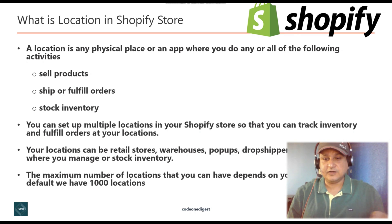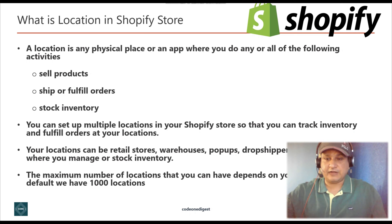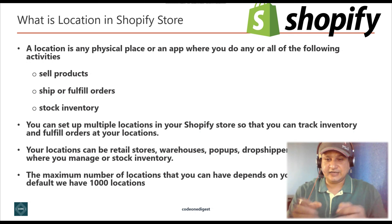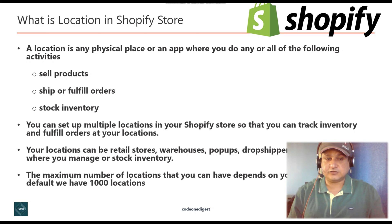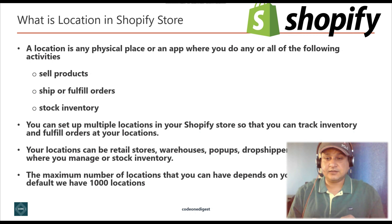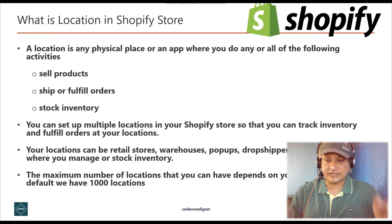You can manage the inventory for all these locations in the Shopify admin console and see the inventory of each product for a given location. You can set up multiple locations in your Shopify store to track inventory and fulfill orders. Your location can be a retail store, warehouse, pop-ups, drop shippers, or any other place where you manage or stock inventory. The maximum number of locations depends on your Shopify plan, but by default you get 1,000 locations.